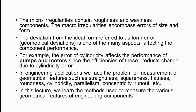Micro irregularities contain roughness and waviness on the surface of components, and macro irregularities encompass errors of size and form. The deviation from ideal form, normally known as form error or geometrical deviation, is one of many aspects affecting component performance. For example, errors of cylindricity on pistons used in hydraulic motors and pumps affect the efficiencies of the product. Deviations like out-of-roundness or out-of-cylindricity lead to increased friction or increased leakage, so it is essential to control errors during manufacturing and measure deviations to ascertain components are within prescribed tolerance limits.